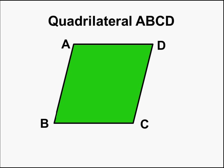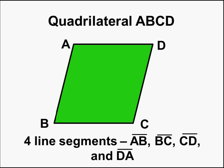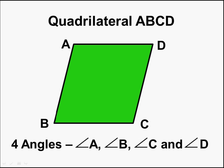This quadrilateral ABCD is made of four line segments: line segment AB, line segment BC, line segment CD, and line segment DA. We also know this quadrilateral has four angles which are angle A, angle B, angle C, and angle D.